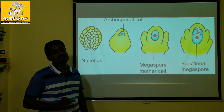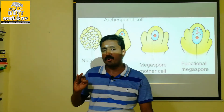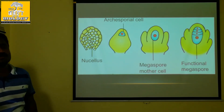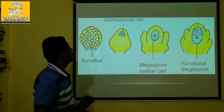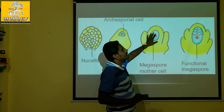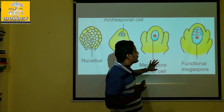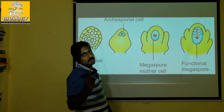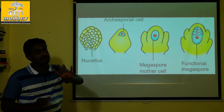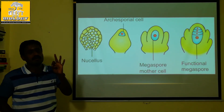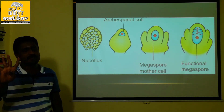The primary sporogenous cells become the Megaspore mother cell, which then undergoes meiosis to produce 4 haploid cells. One of the 4 haploid cells is the functional Megaspore. The functional Megaspore develops into the embryo sac — 4 steps completed.